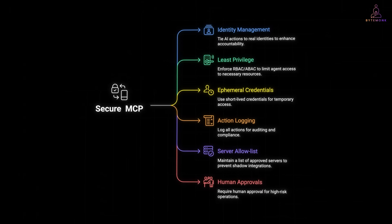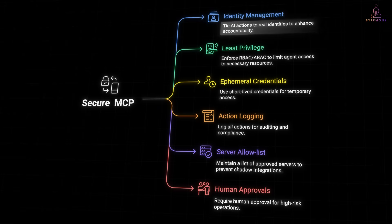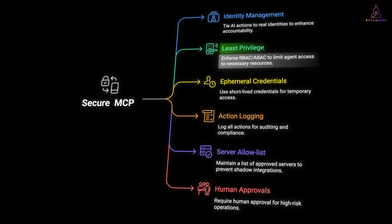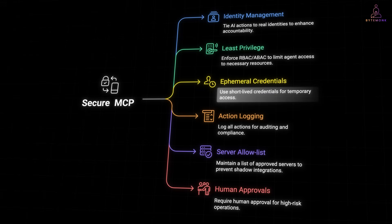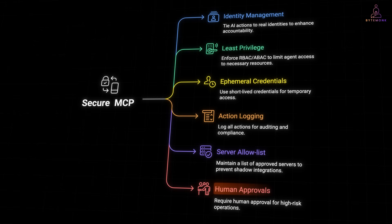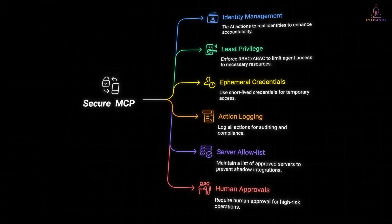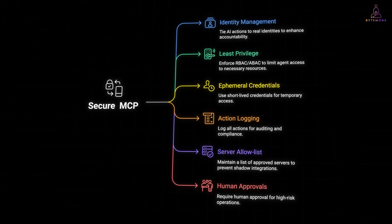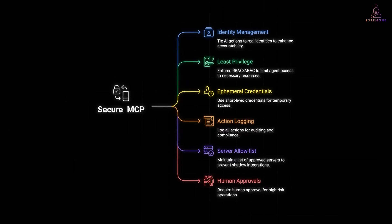When you are deploying MCP, a few best practices go a long way. Always tie AI actions to real identities instead of static super accounts. Enforce least privilege with RBAC or ABAC so agents can only access what they truly need. Make access ephemeral through short-lived credentials. And log every action — approved or denied — for auditing and compliance. Keep an allow list of MCP servers to prevent shadow integrations, and add human approvals for high-risk operations like writes to production databases. These basics ensure AI plays by the same rules as your engineers, reducing the blast radius if something goes wrong.